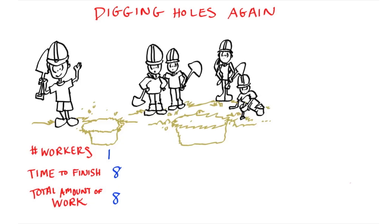But if you bring all your friends over to dig the hole with you, the amount of time to finish and the total amount of work might be different. So now we're going to have four workers, and perhaps they'll work together for eight hours total and thus be able to finish in two hours — four times as fast. We'd call this ideal scaling, since adding four times as many workers allowed us to finish four times as fast.